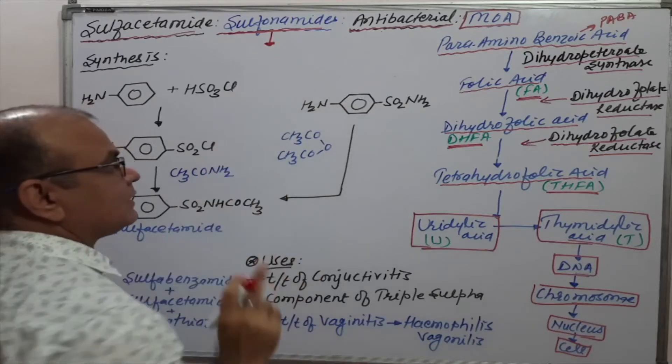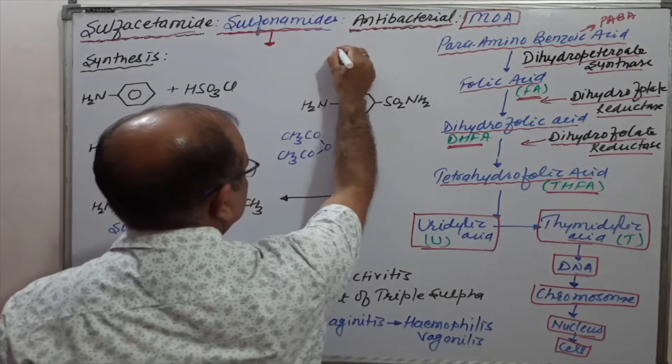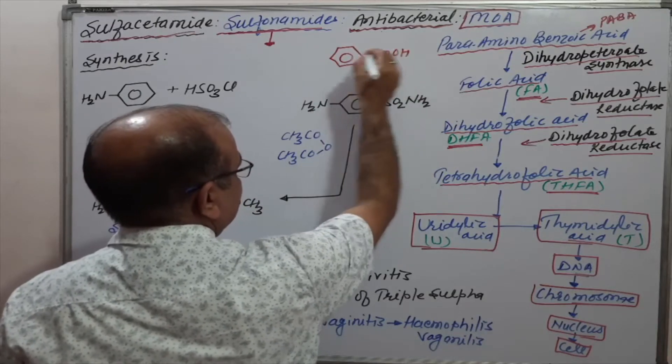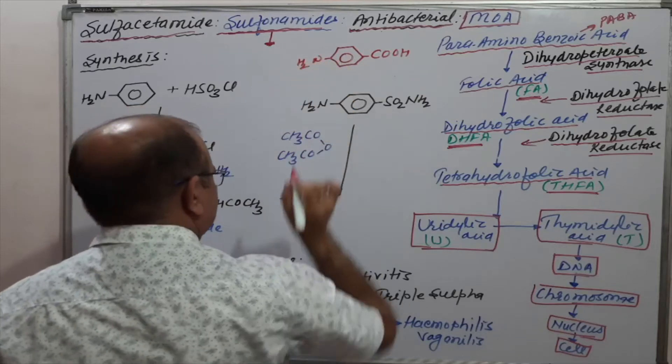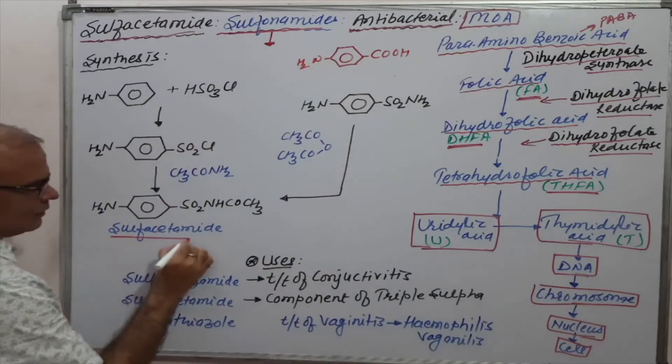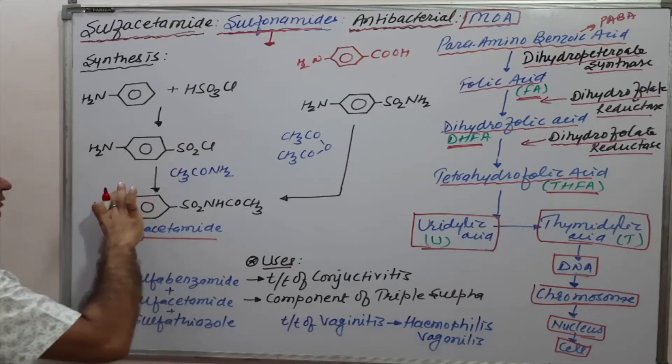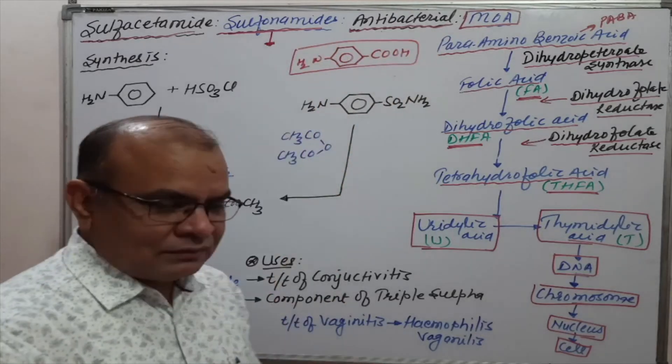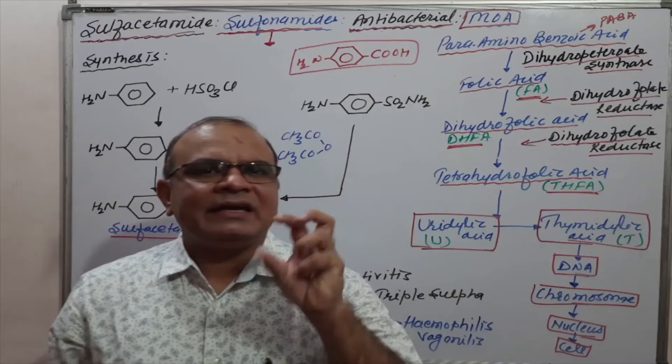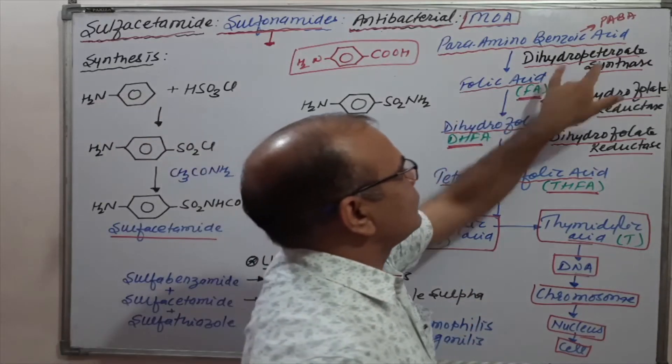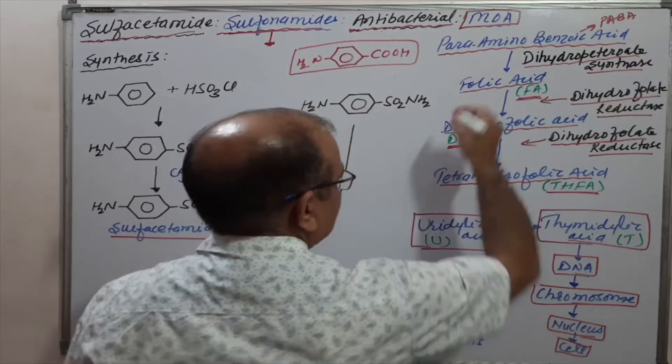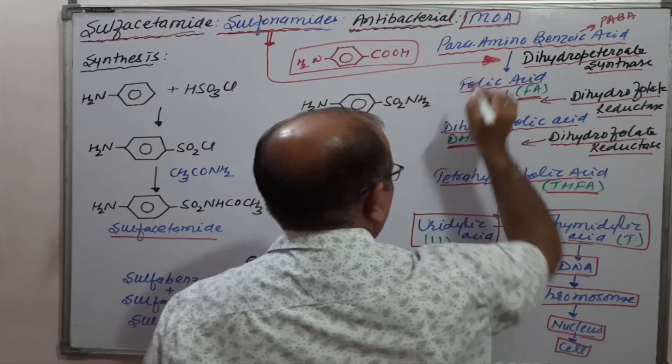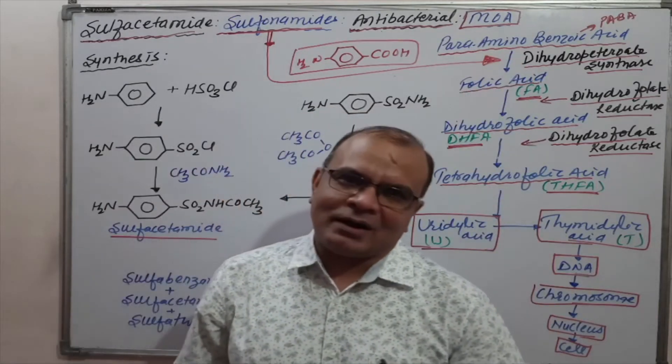Sulfacetamide structure is the analog of PABA. PABA has COOH and NH2 groups. Sulfacetamide and PABA have similar structure. This means sulfacetamide competitively inhibits dihydropteroate synthase. Sulfacetamide inhibits this step due to its PABA analog structure.